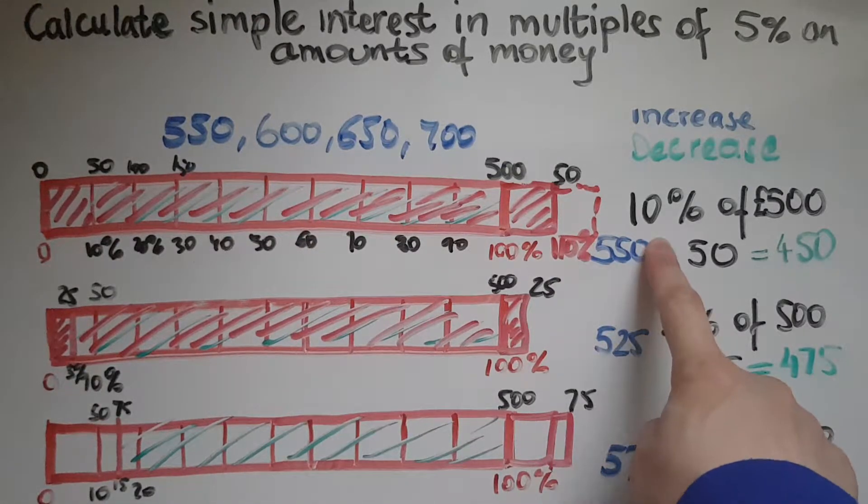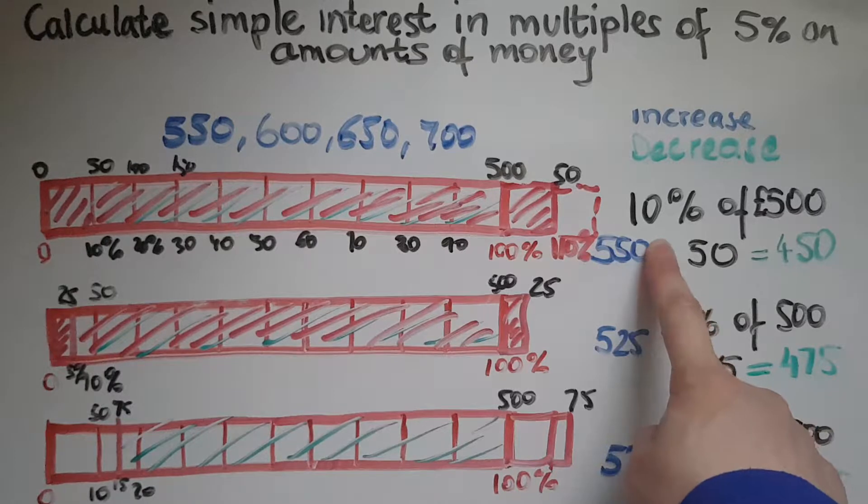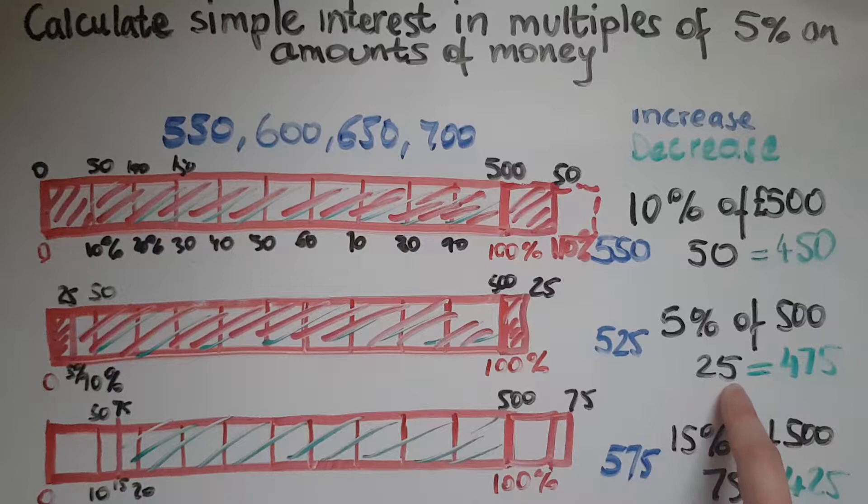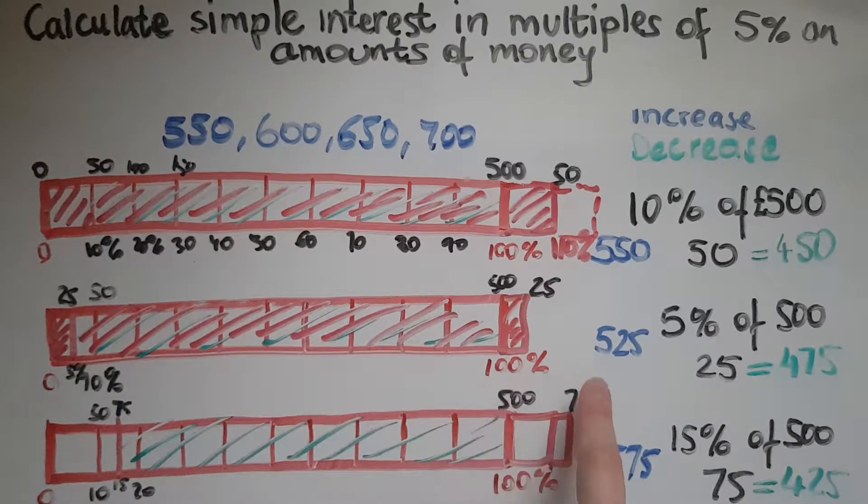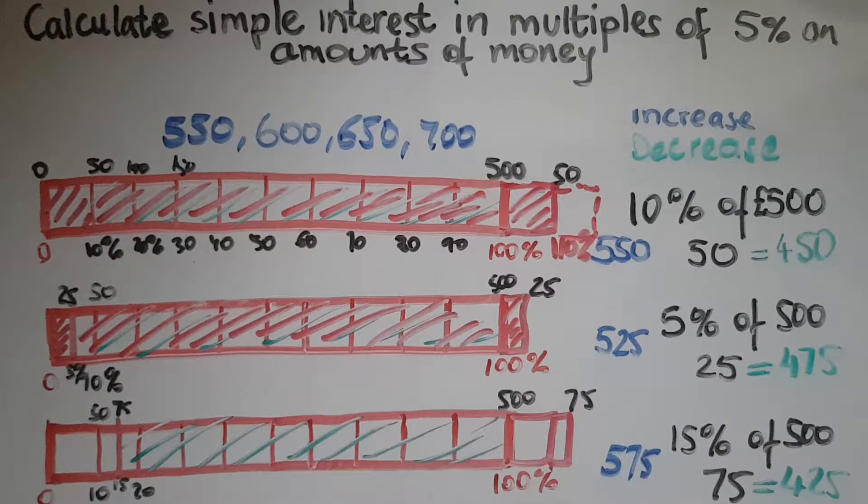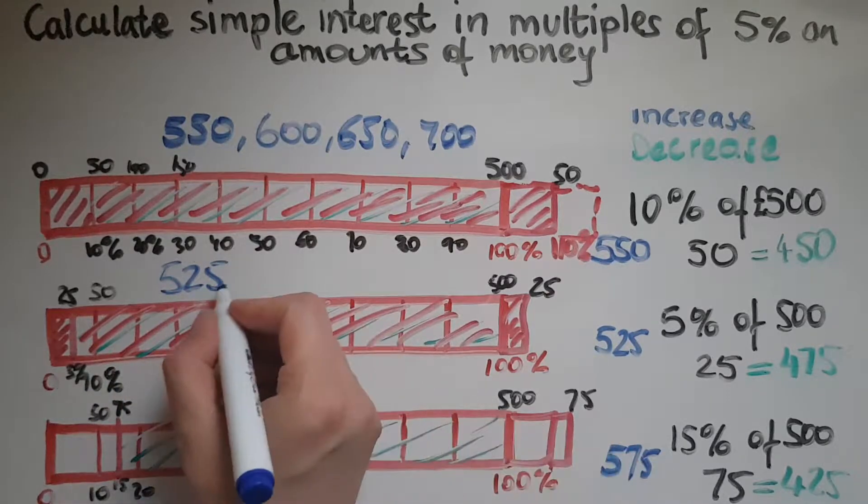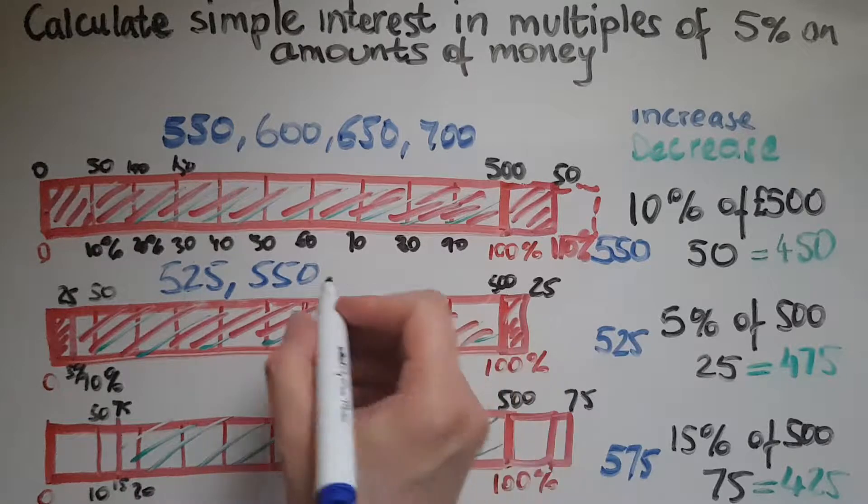That's what we mean when you're paid 10% simple interest. For 5%, that's £25, so at the end of year one you'd have £525. Add another £25, that's £550 at the end of the second year.